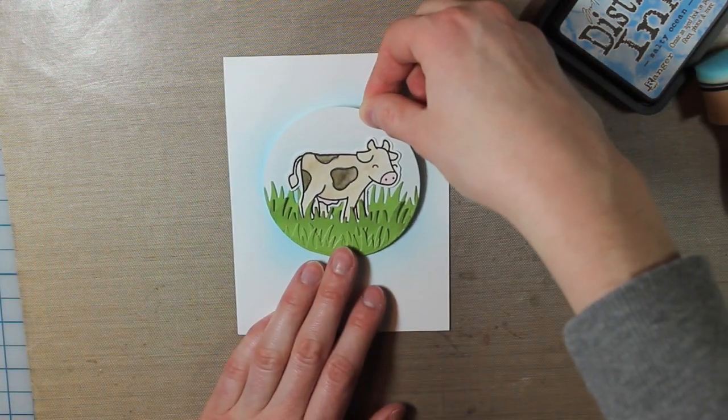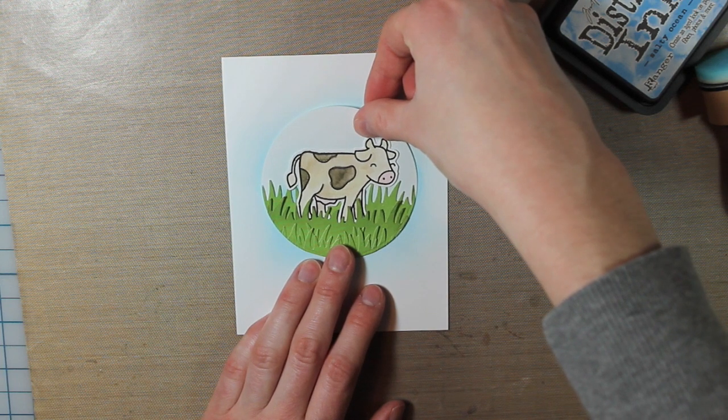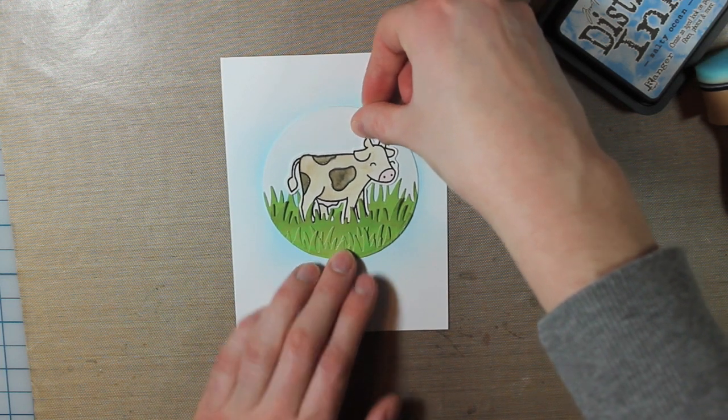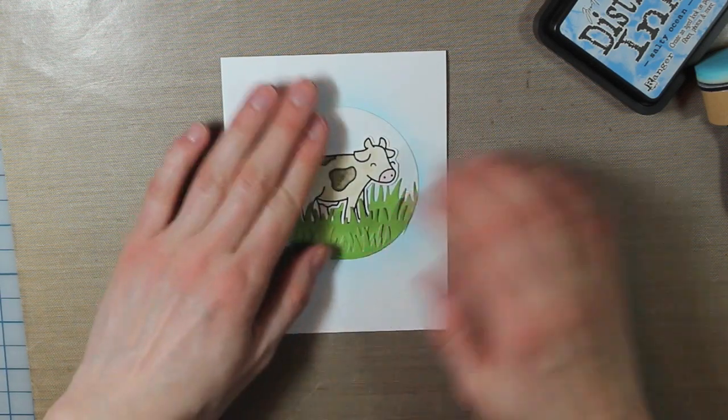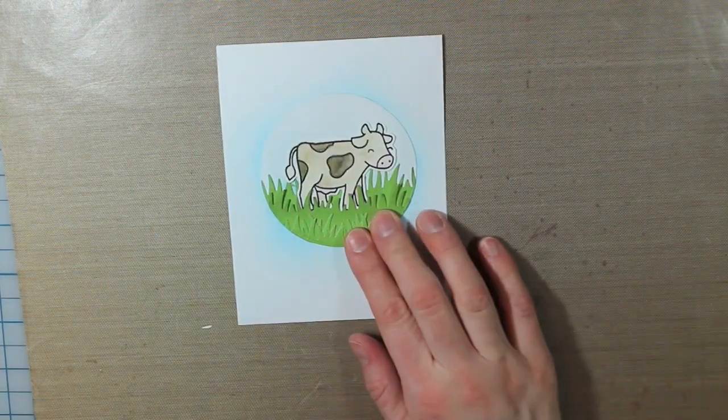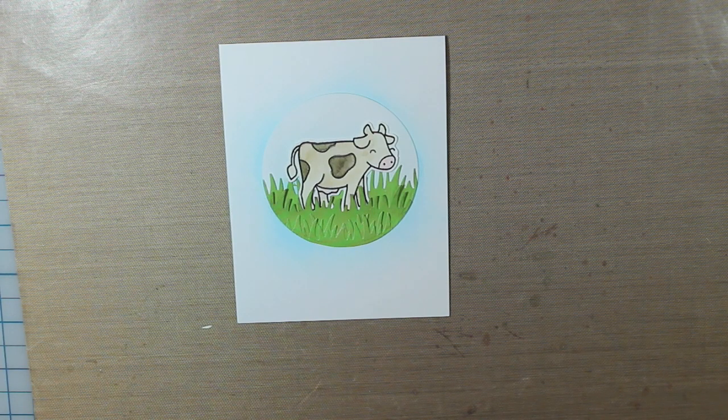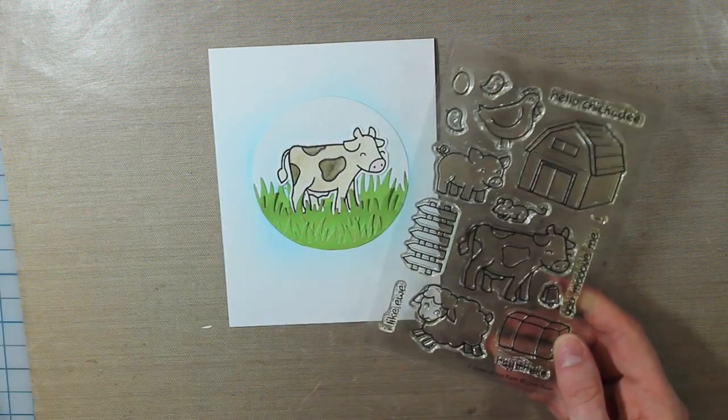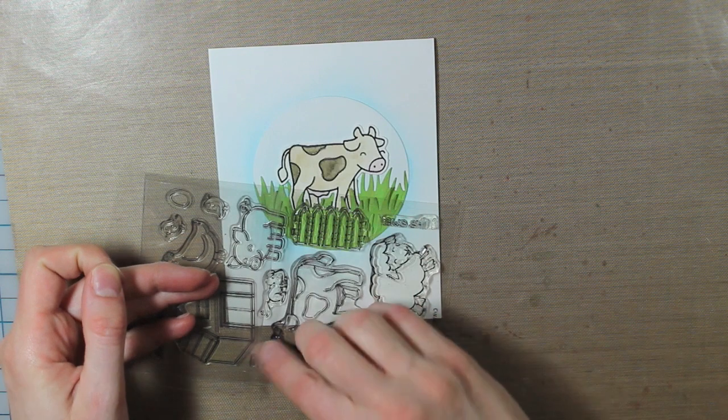Then I can go ahead and adhere that down. I actually adhered it into place with my ATG gun, but since there was so much ink on the background, it wasn't sticking very well. So I went ahead and adhered that with my Tombow Mono Multi Glue. The liquid glue just works a little bit better on top of the Distress Ink.